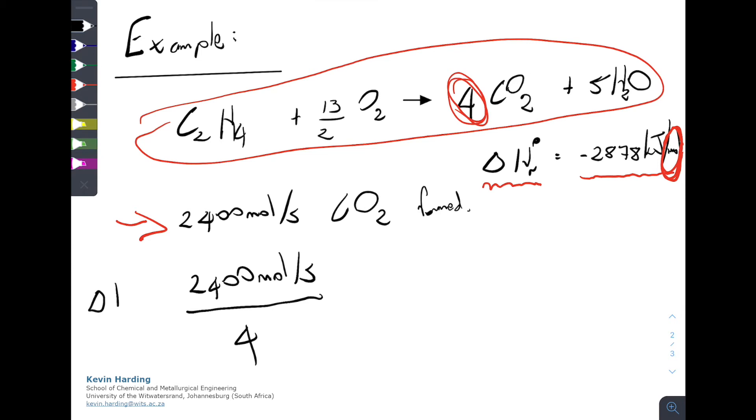The delta H of that would then be equal to that 2400, divided by four, multiplied by minus 2878, which will equal minus 1.73 times 10 to the 6 kilojoules per second.